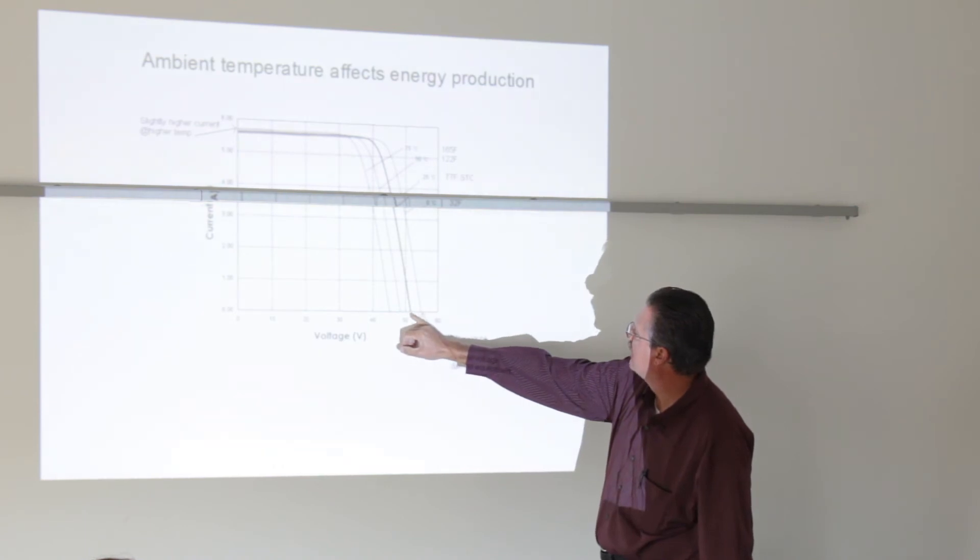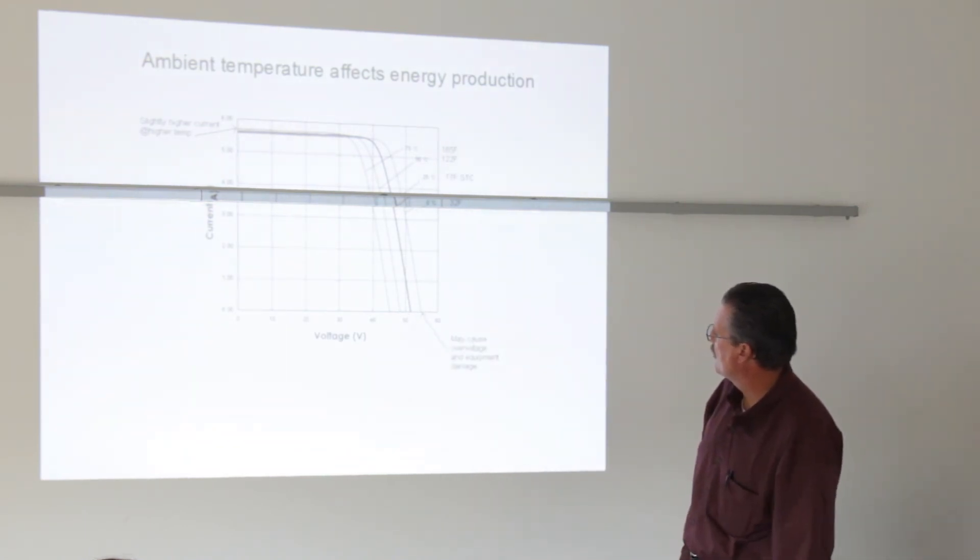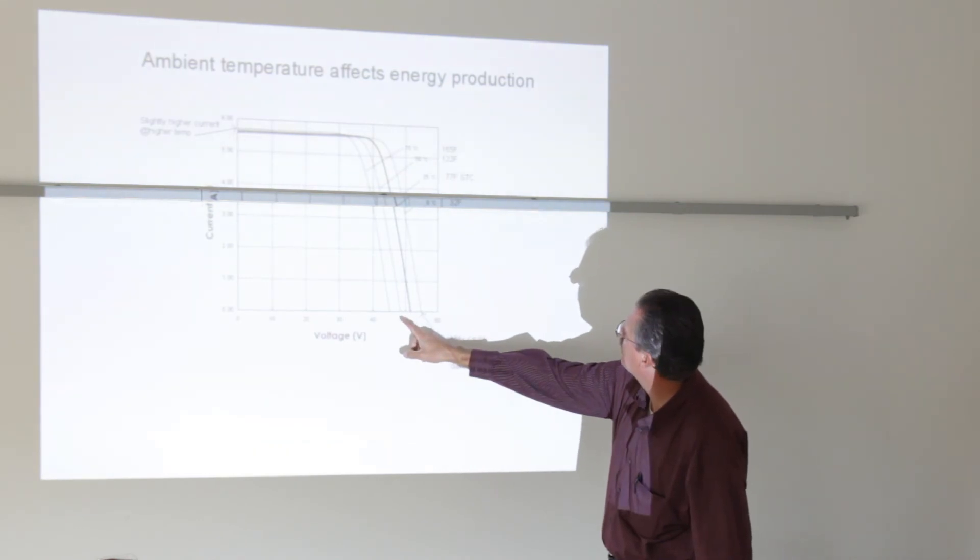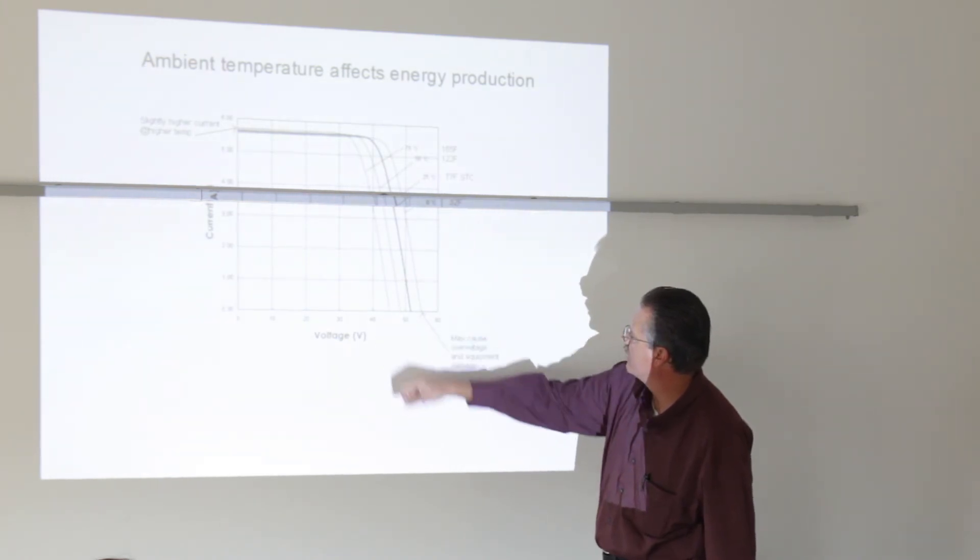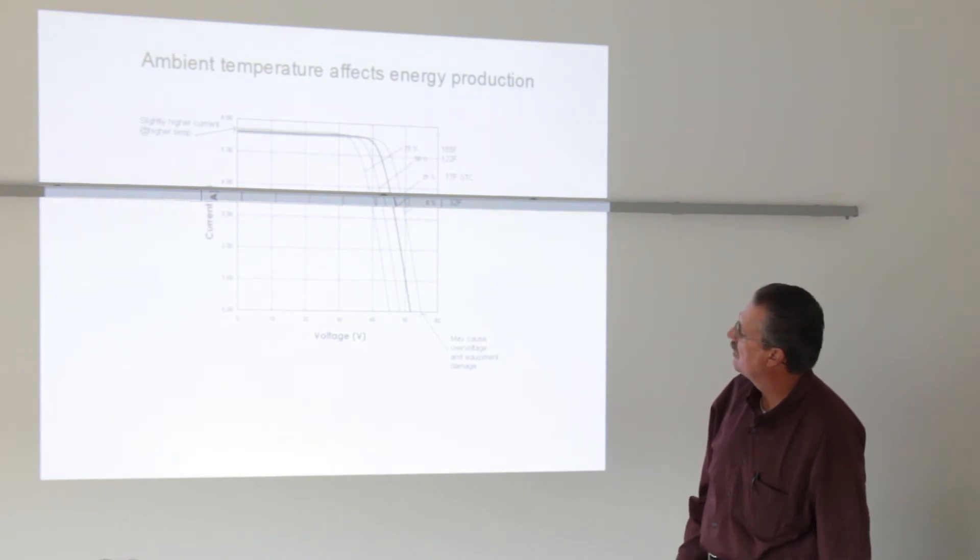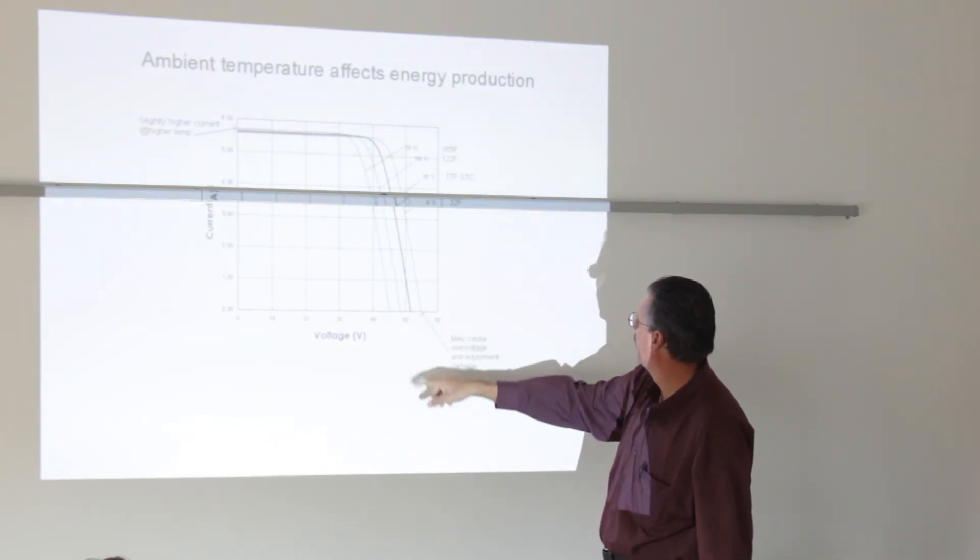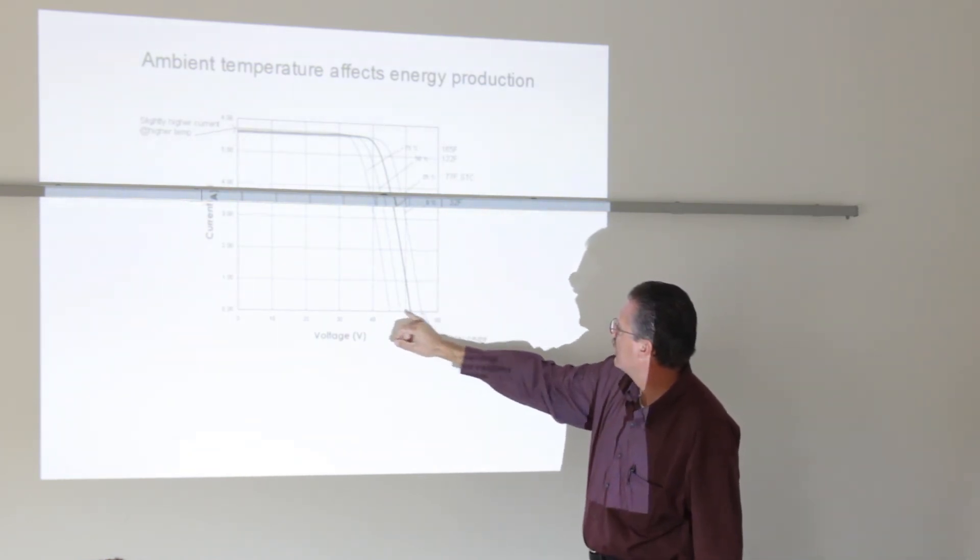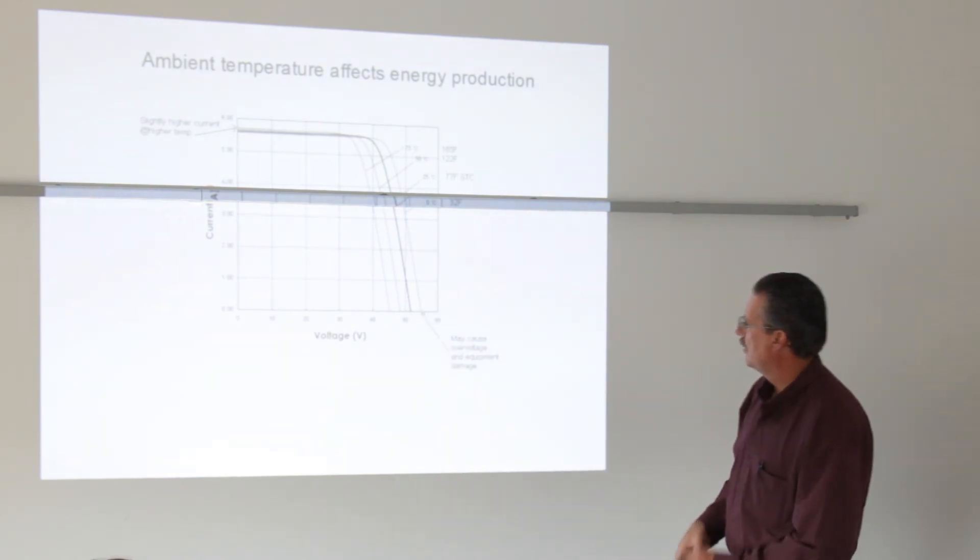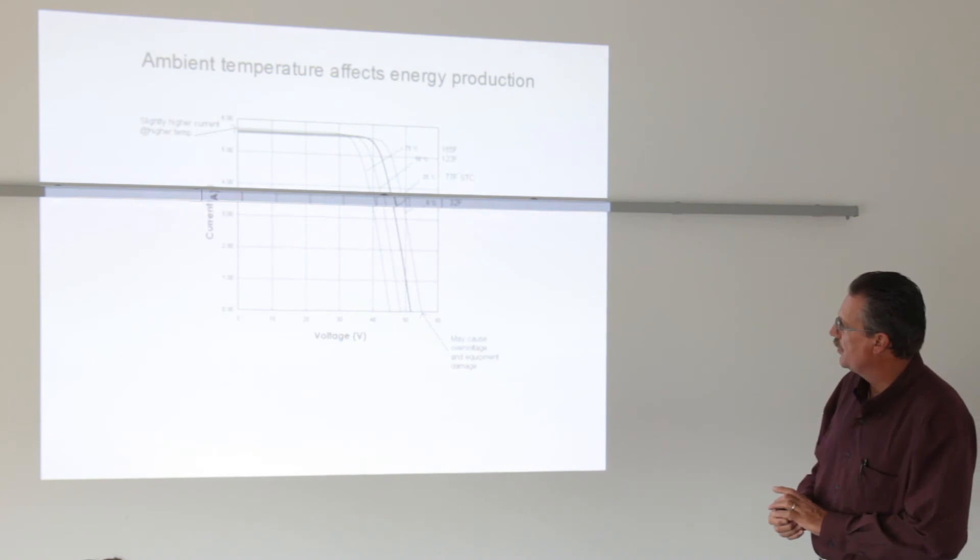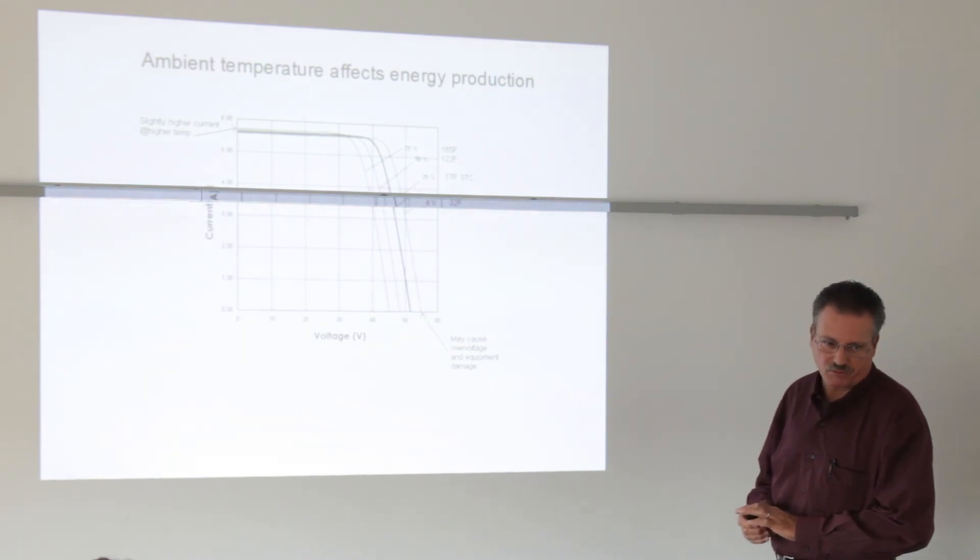That is a standard of testing. And we have that by the dark line here. So as an example, this module puts out, say, 52 volts at 77 degrees. At 165 degrees, which is a very warm rooftop temperature, it can get into the mid-40s. So you'll have a decrease in energy production. In fact, if it's hot enough, it may not even start the inverter up if it falls outside the operating window for that inverter. At 32 degrees, it is going to be in the mid-50s. So you're looking at almost a 10-degree difference in voltage where in the wintertime you could actually cause an over-voltage condition.